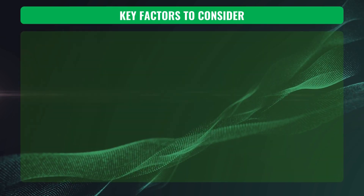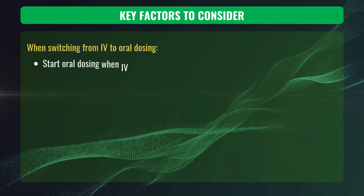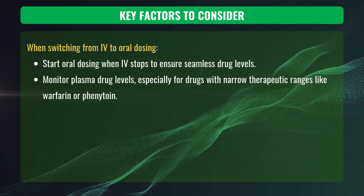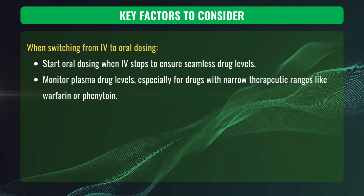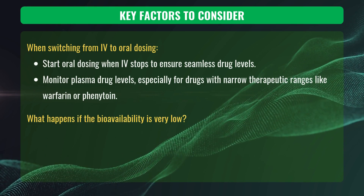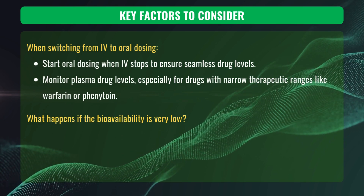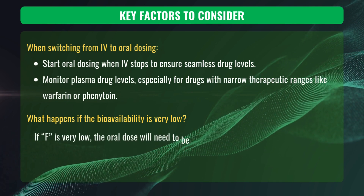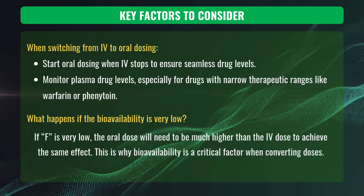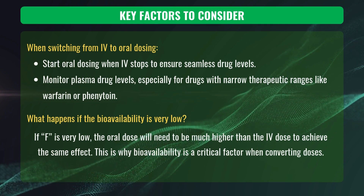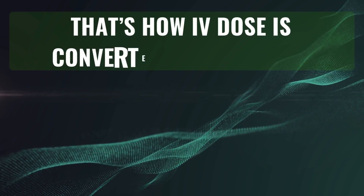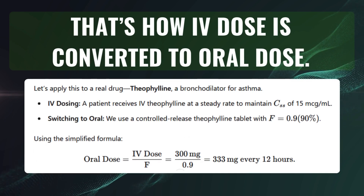The key factors to consider when switching from IV to oral dosing: start oral dosing when IV stops to ensure seamless drug levels. Monitor plasma drug levels, especially for drugs with narrow therapeutic ranges like warfarin or phenytoin. If bioavailability is very low, the oral dose will need to be much higher than the IV dose to achieve the same effect — this is why bioavailability is a critical factor when converting doses. That's how IV dose is converted to an oral dose. Here is another example for you.